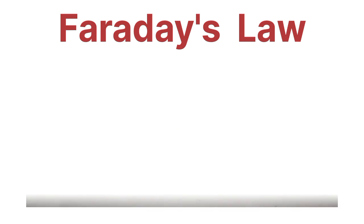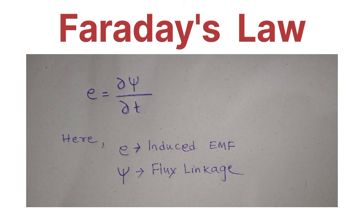That EMF will be del psi divided by del t. Here psi is nothing but the flux linkage - the total flux linking to that number of turns of a coil will be equal to psi.